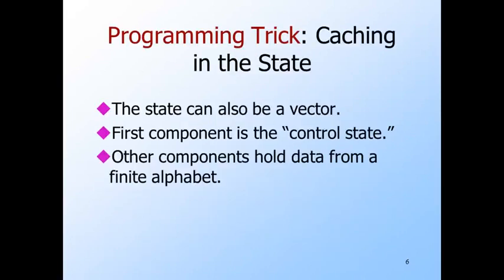A similar trick is to think of the state as a vector, with each component from some finite alphabet. The first component is used to control operation — what we normally think of as the state — but other components are used as a cache to hold values the Turing machine needs to remember. These values are bits or tape symbols, but they can be anything as long as they are chosen from a finite alphabet.